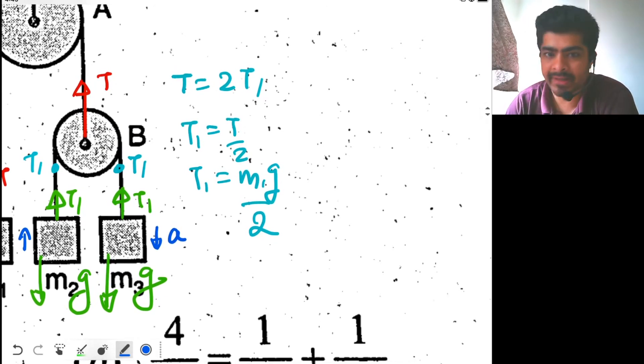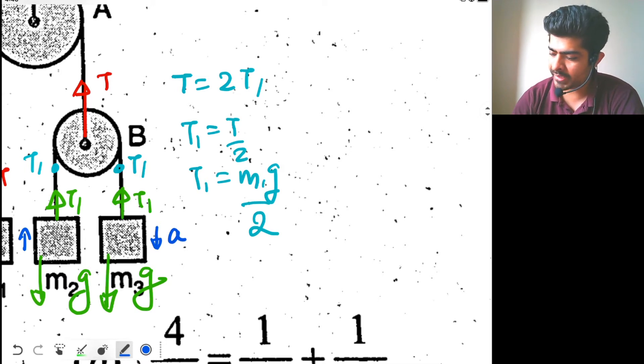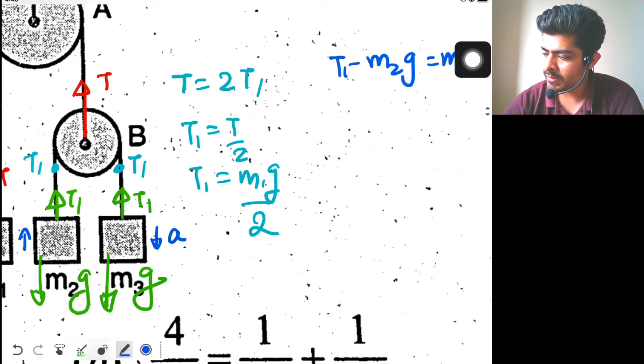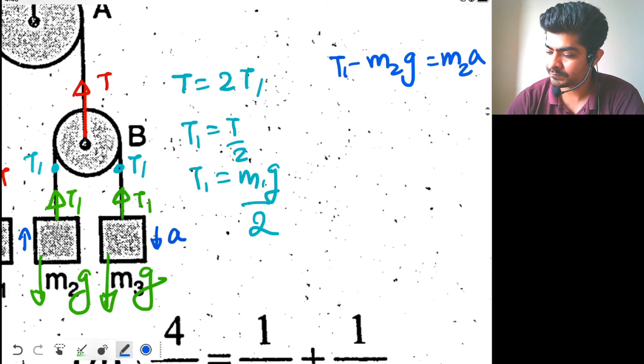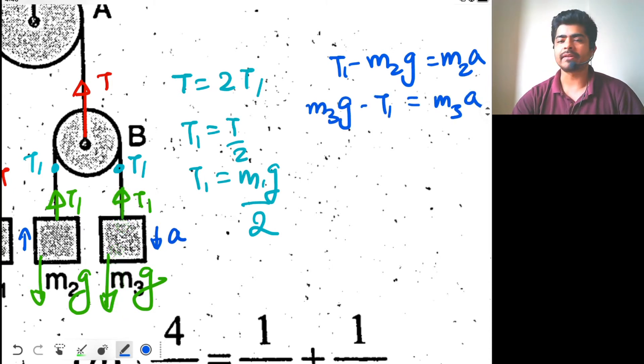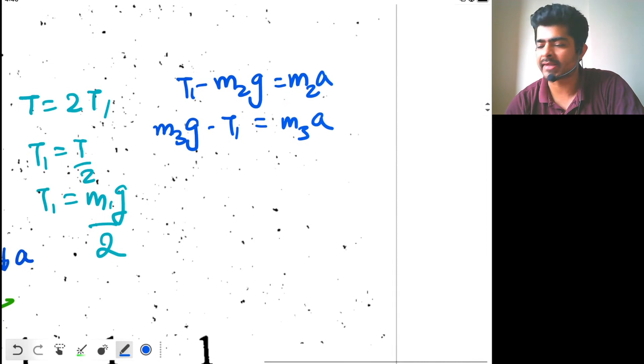Then we can write down the equation for both of them. For m2, since m2 is going up, we can say that T1 minus m2g is equal to m2a. For m3, m3g minus T1 is equal to m3a. We have to eliminate a from the equation. That's all we have to do. So for now, let's just add them.